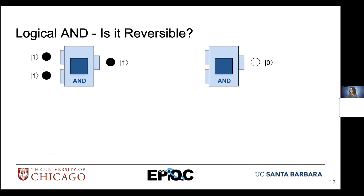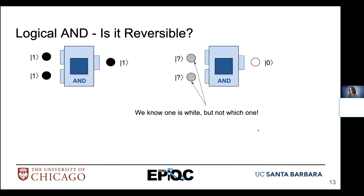Let's look at that in a little bit more depth. If we have one and one, we know that our output is going to be one. But if our output is zero, we don't know for certainty what exactly these two inputs are going to be — it could be zero and zero, or it could be zero and one. We know that one of these inputs will be white, but we can't tell for certainty which one it is, or if they're both white.